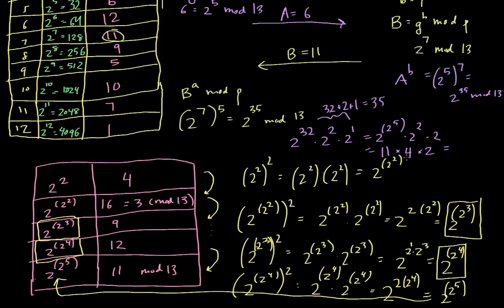So now we get 11 times 4 times 2, which is 88. We want to do 88 mod 13. So what is 88 mod 13? Let's just divide out to see what we get. So let's put 13 into 88. We get 6, and so we have a remainder of 10. And so 88 mod 13 is 10. And so the shared secret that Alice and Bob will have come up with in this case is the value 10.